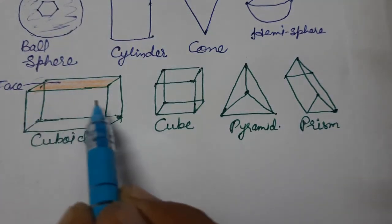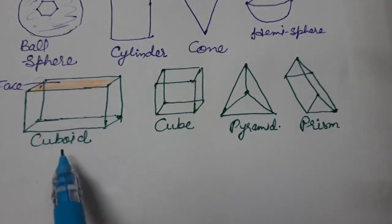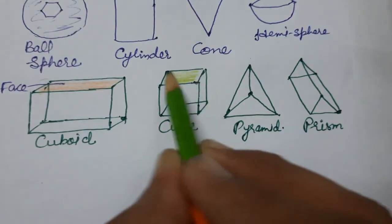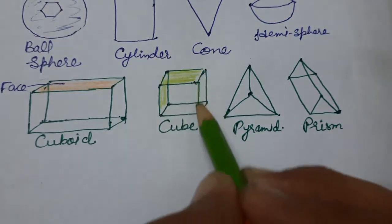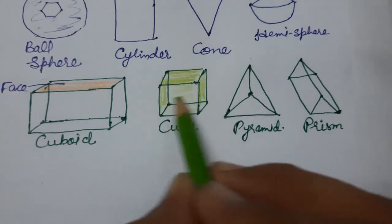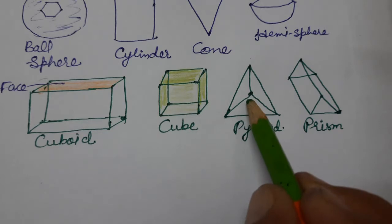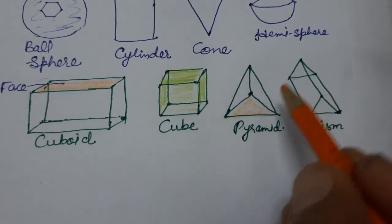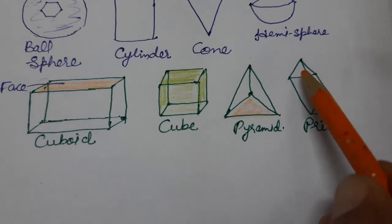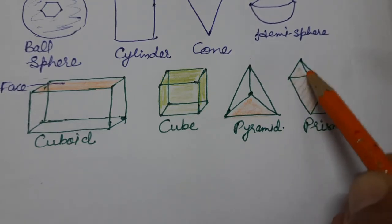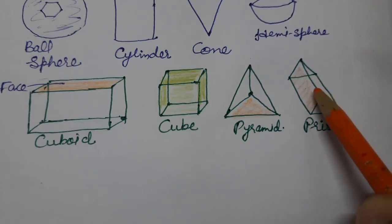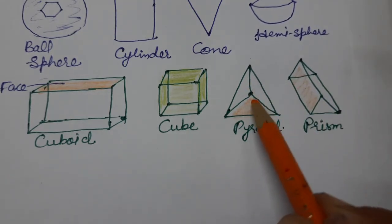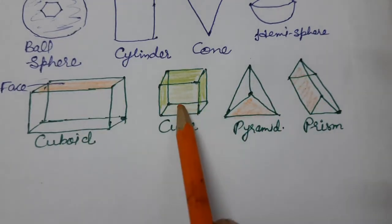A cuboid has a total of six faces. A prism has five faces. A pyramid has four faces — three triangular faces and one base at the back. A cube and cuboid both have six faces. You can check by counting each flat surface on the shape.